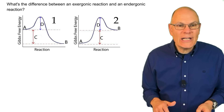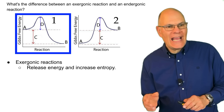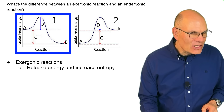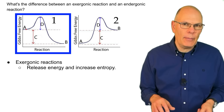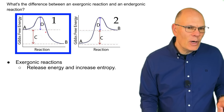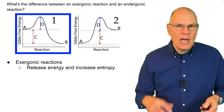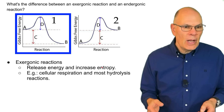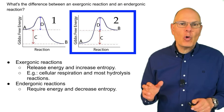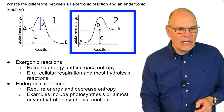What's the difference between an exergonic reaction and an endergonic reaction? Exergonic reactions release energy and increase entropy. For example, burning wood starts with cellulose and winds up with many unorganized atoms of carbon dioxide and water — that's an increase in entropy. Cellular respiration and most hydrolysis reactions are exergonic. Endergonic reactions require energy and decrease entropy — examples include photosynthesis or almost any dehydration synthesis reaction.